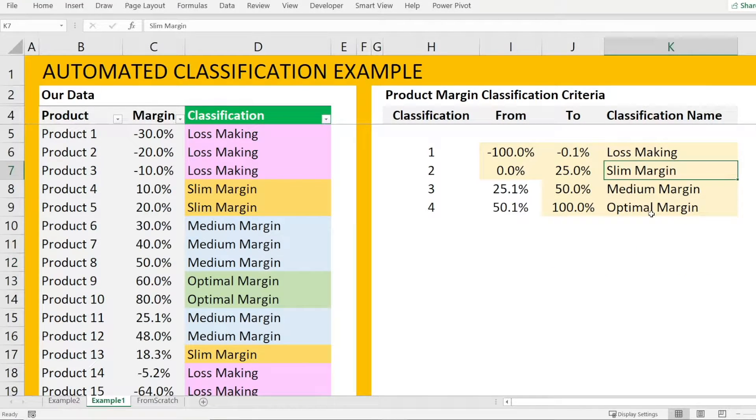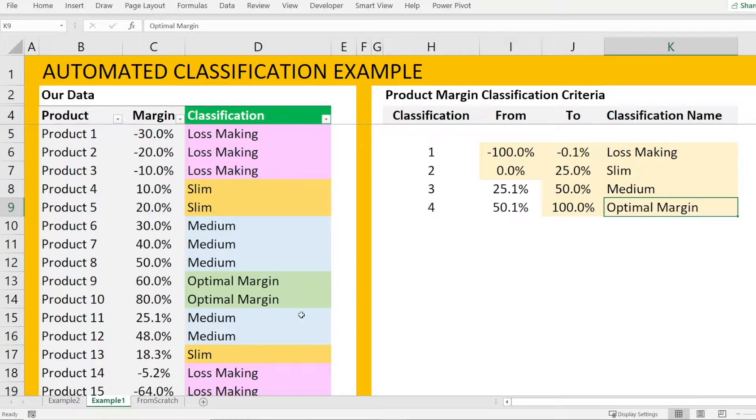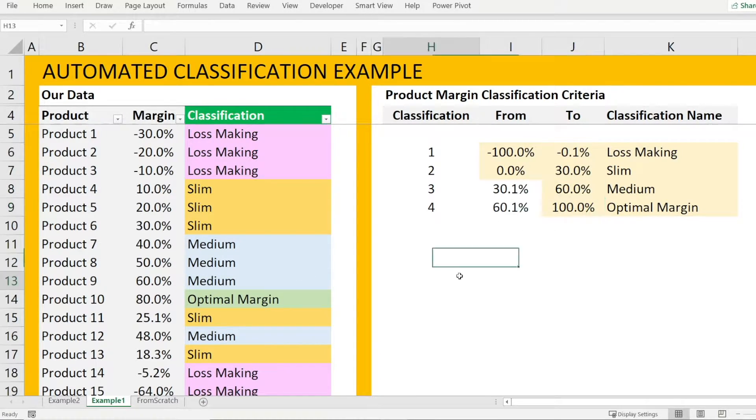Now, if we change the classification name in here, say to slim, everything updates itself. Calling that medium, that updates itself to it. Not only that, if we change the bucket from and to range, say from 25 to 30 for slim, that updates itself. And if we change the medium to 60, that also updates itself. So it makes it really easy to have the dashboard update itself whenever someone requested a change in the classification.